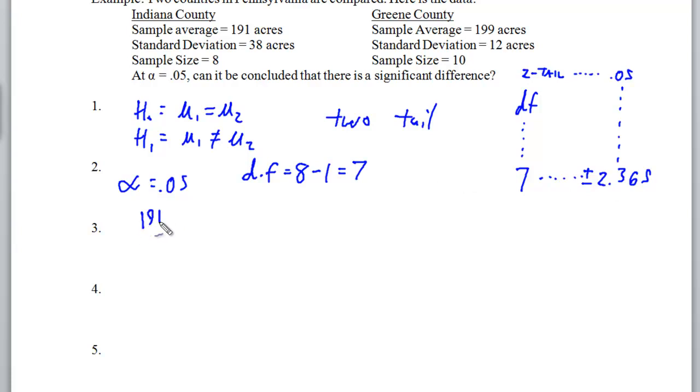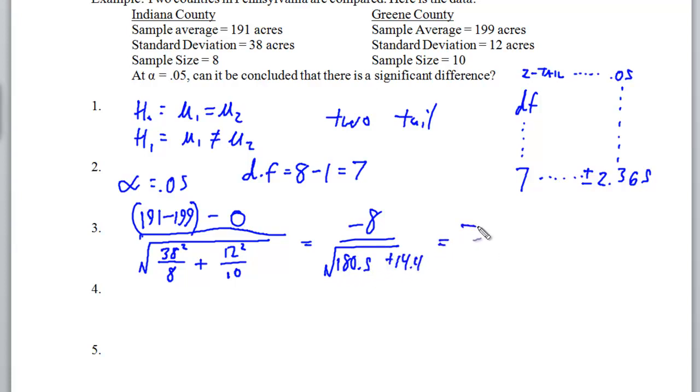Going to the formula, I'm going to take 191 minus 199. Order doesn't matter since we're choosing a two-tail test. We're going to subtract zero from that. Then we have our square root in the denominator. Our first standard deviation was 38, and our first sample size was 8. Our second standard deviation was 12, and our second sample size was 10. Doing our process of the numerator, we get negative 8. In the denominator, we have 180.5 plus 14.4. We're going to have an answer of negative 0.57 or 57 hundredths.